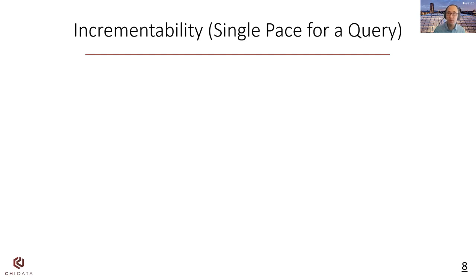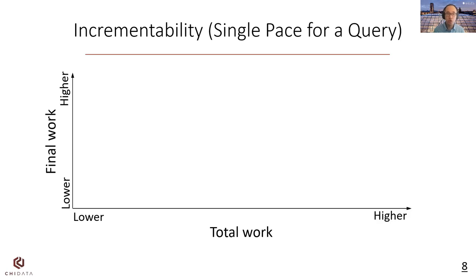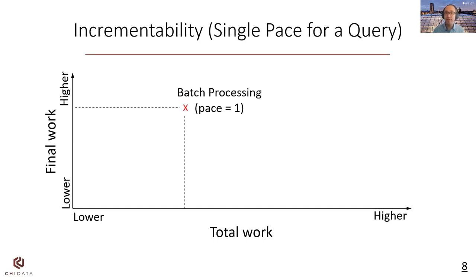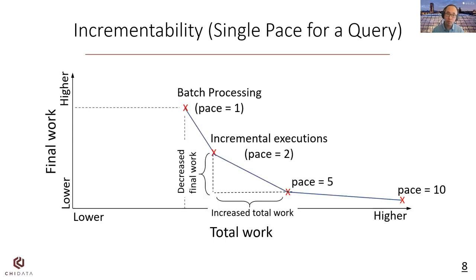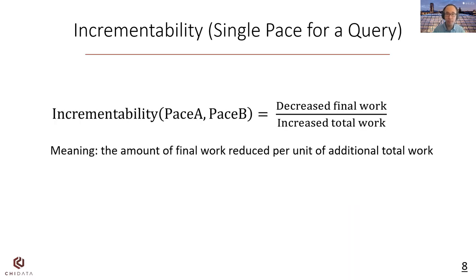Let's start with the definition of incrementability for a query with a single pace. Incremental execution essentially makes a trade-off between total work and final work. If the pace is 1, it is executed as batch processing. As we increase the pace from a smaller one to a larger one, we have the benefit of decreased final work but an overhead of increased total work. Therefore, we define incrementability as a ratio between the two — it represents the amount of final work reduction per unit of total work invested into the incremental execution. The higher the value, the more amenable the query is to incremental executions.